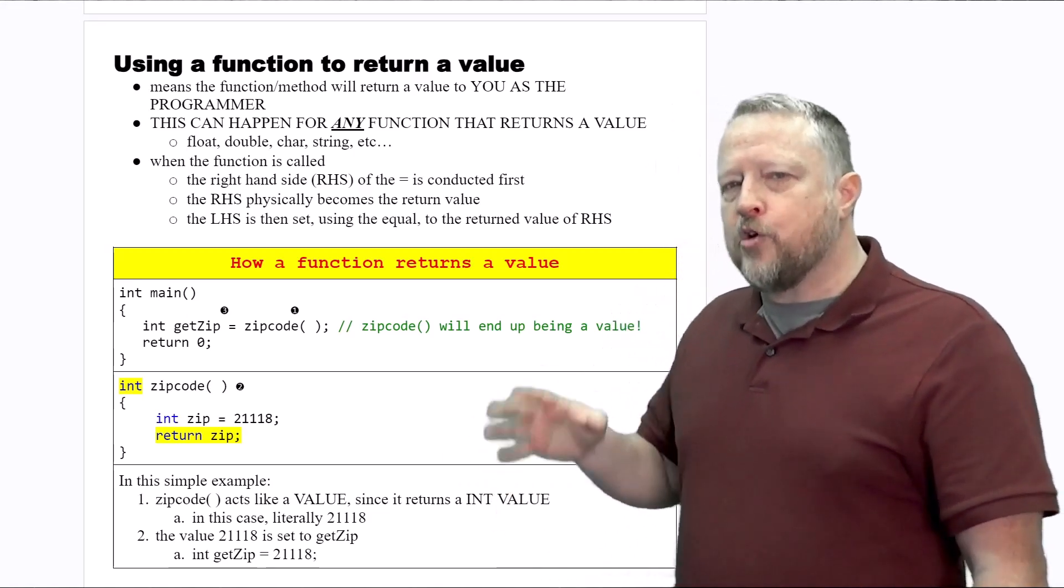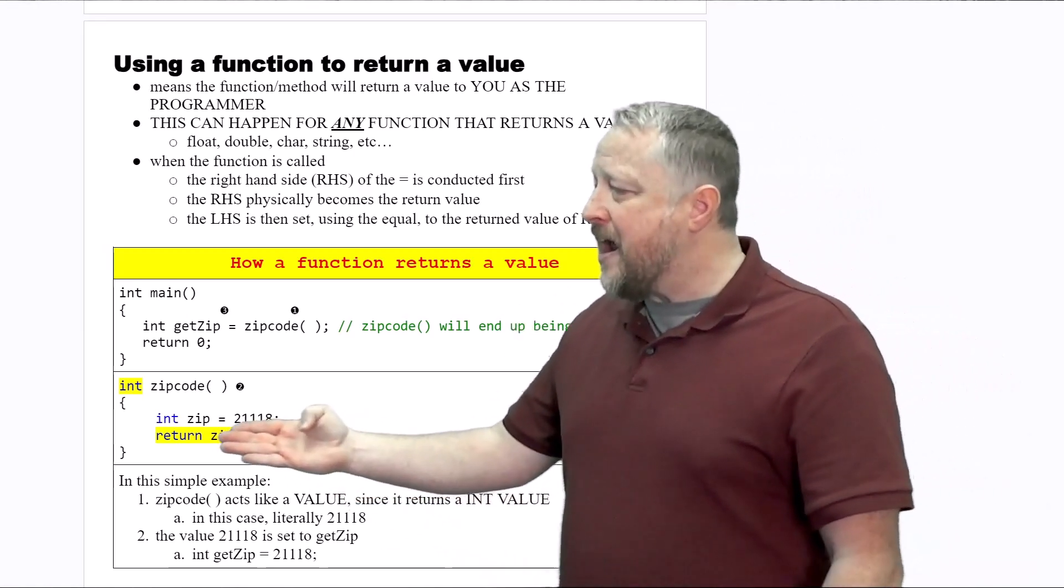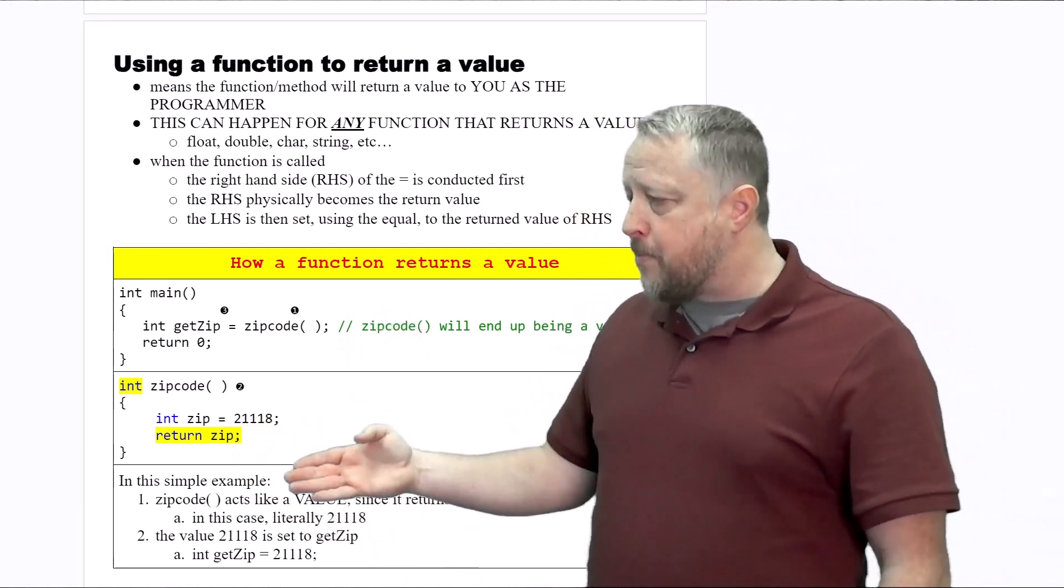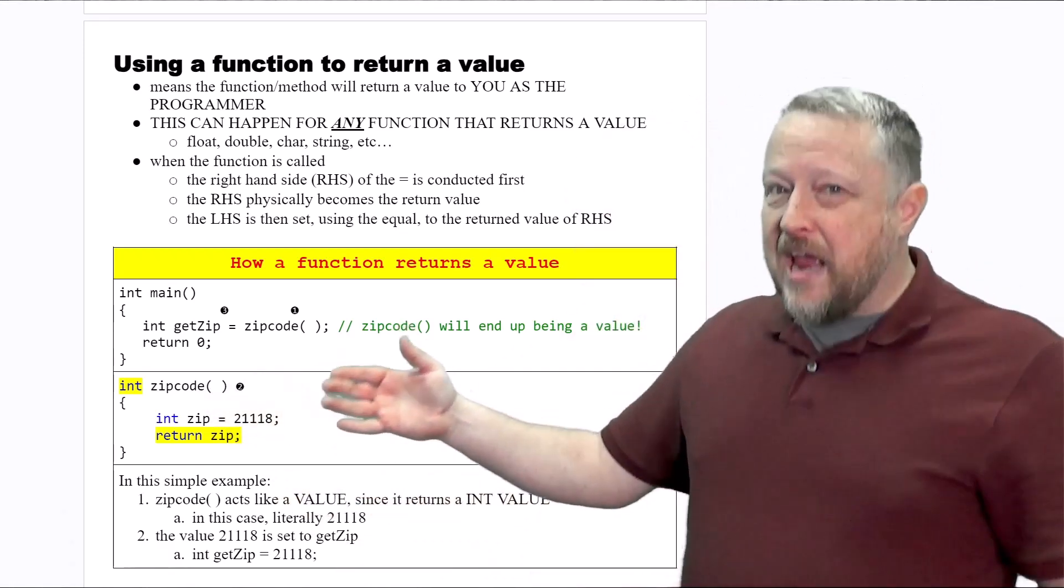That's a key word—we return. If we have a function that returns literally any type of value, it has to have the word return. Your compiler will not let you compile this function if you don't have a return of something.